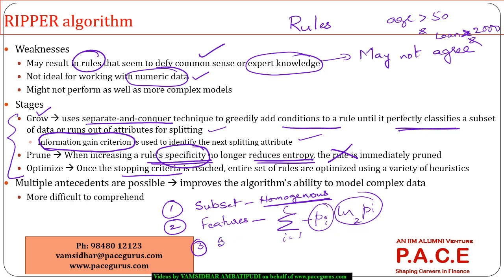Stopping criteria can include: the subset belonging to one single class, all features already used for classification, or a maximum number of rules set by the user. Once the stopping criteria is reached, the whole set of rules is optimized. In 1R there is only one antecedent, whereas in RIPPER the antecedents can be many more, allowing complex data to be analyzed — though as the algorithm becomes more complex, comprehensibility weakens.